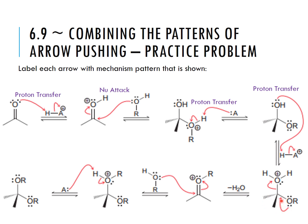Looking at the next step, we have two arrows: one going from a lone pair to form a new double bond, and another going from a bond onto the oxygen — this shows a leaving group, the bond breaking with electrons going onto oxygen as a lone pair. That's water as our leaving group: loss of leaving group. The next step is going from a lone pair to a carbon, similar to before — again a nucleophilic attack. In the last step, the conjugate base forms a bond to a hydrogen: another proton transfer, a deprotonation, giving us the final product.